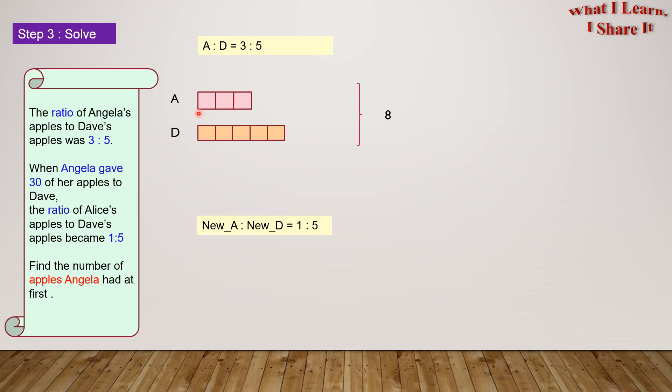A is to D equals 3 is to 5. What this means is for 3 units of A, D will have 5 units. The total units in this ratio, 3 is to 5, is 8.